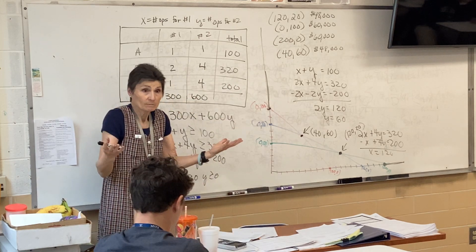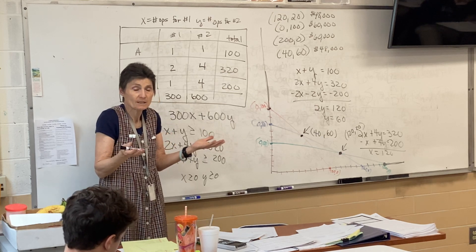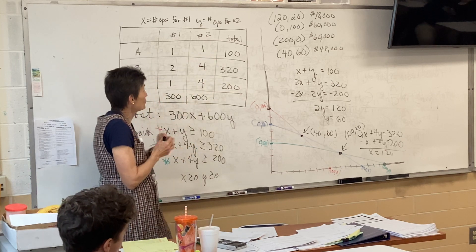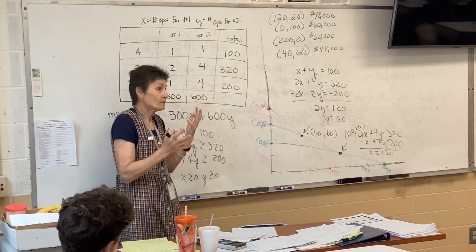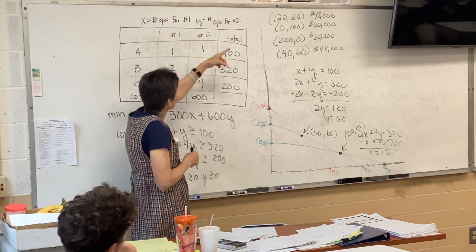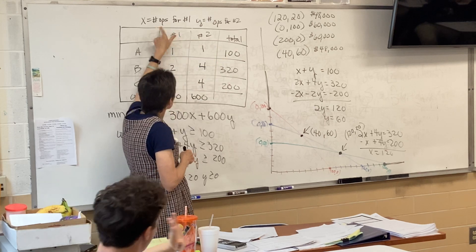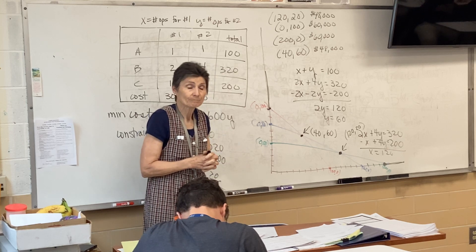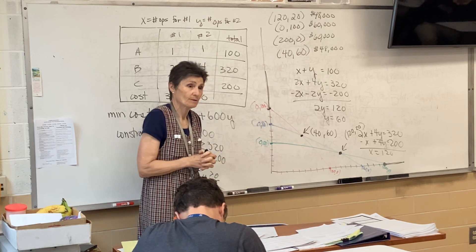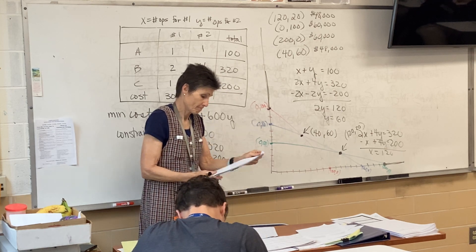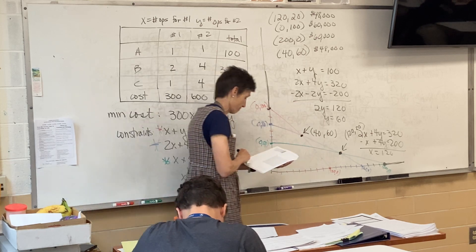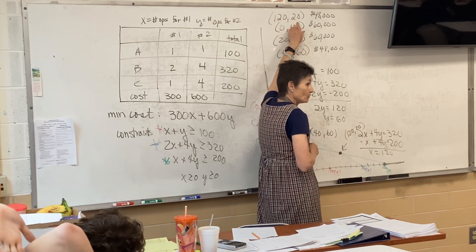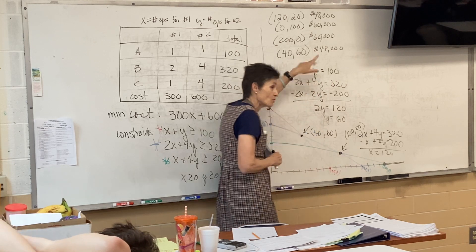So what does that mean in terms of answering the question? We have two options. We have two options, and then we don't know what other factors might be involved. But maybe we like the manager of factory one better than the manager of factory two. So then we go with that first option up there. But we can go with either one. So we either do 120 from one and 20 from two, or we do 40 from one and 60 from two. And either way, it's going to cost us $48,000. That's perfectly okay that two of them match.